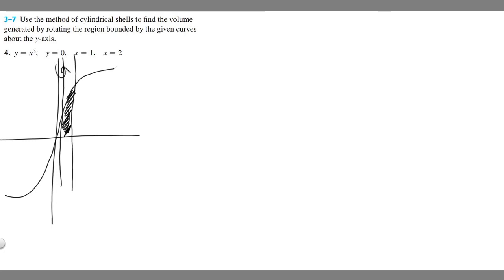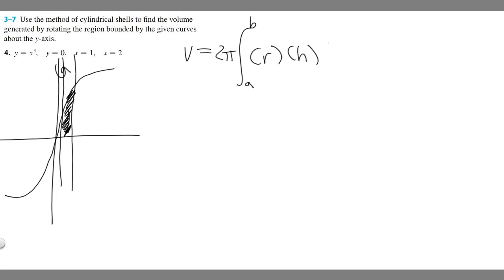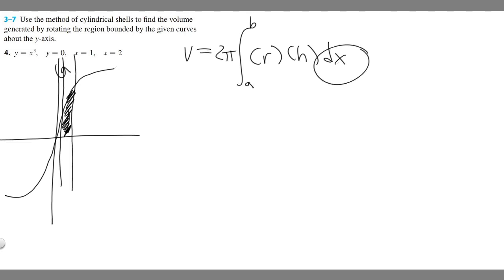You should know that the formula for cylindrical shells is V equals two pi times the integral from a to b of your radius times your height, then dx. In this case we're using x variables because we're rotating around something vertical. If you rotate around something vertical you use x values; if you're rotating around something horizontal you use y.